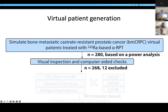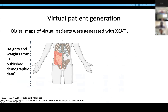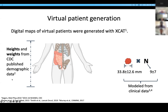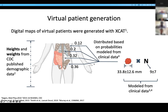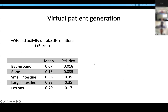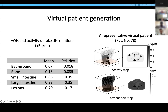In this trial, we simulated 280 patients based on power analysis. The patients were simulated to have prostate cancer and were treated with radium-223-based RPT. We conducted visual inspection and computer-aided checks, and 12 patients were excluded during that process. Digital maps of each virtual patient were generated using XCAT. The height and weight of the virtual patients were imported from CDC-published demographic data. For each patient, the lesion diameter and lesion number were sampled from Gaussian distributions with parameters modeled from clinical data. The lesions were inserted into different regions of the virtual patients with distributions modeled from clinical data. We considered five ROIs with activity uptake sampled from Gaussian distributions, also modeled based on published clinical data.